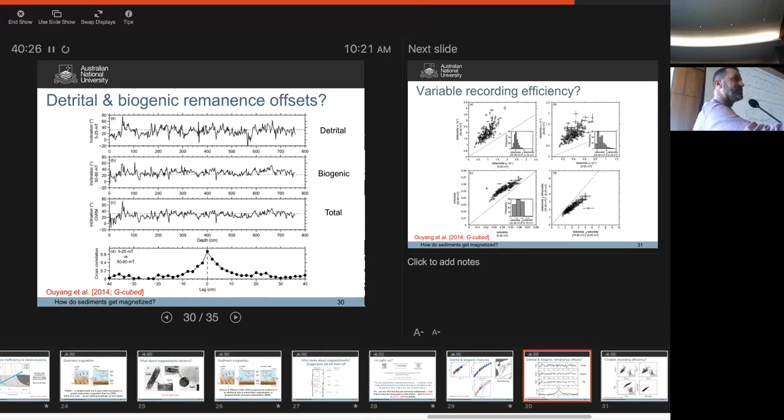From 5 to 25 millitesla was the detrital component, from 50 to 80 was the biogenic component. If you do a principal component analysis to get a characteristic remanence for both and compare them, there's minor differences. But if you do a cross-correlation effectively, there's no phase lag between those signals. So what we would argue that tells us is that there is a biogenic component, there is a detrital component, they're both recording exactly the same signal and it's not a BRM. It's just these things are dying, they're getting mixed in the sediment and they're contributing to a remanent magnetization, just like all the detrital particles.